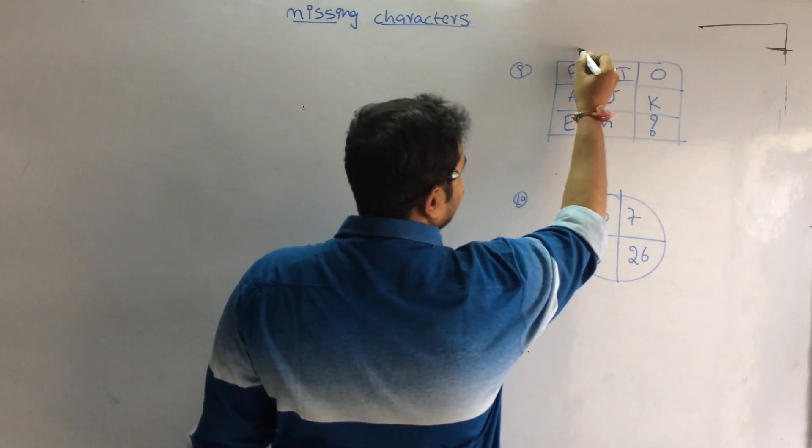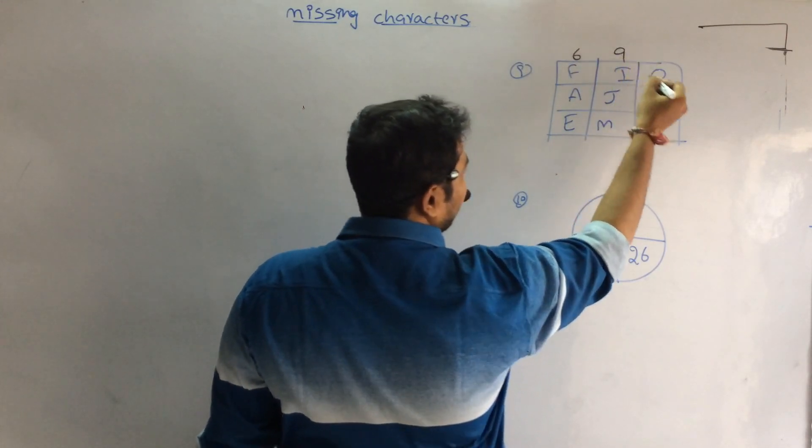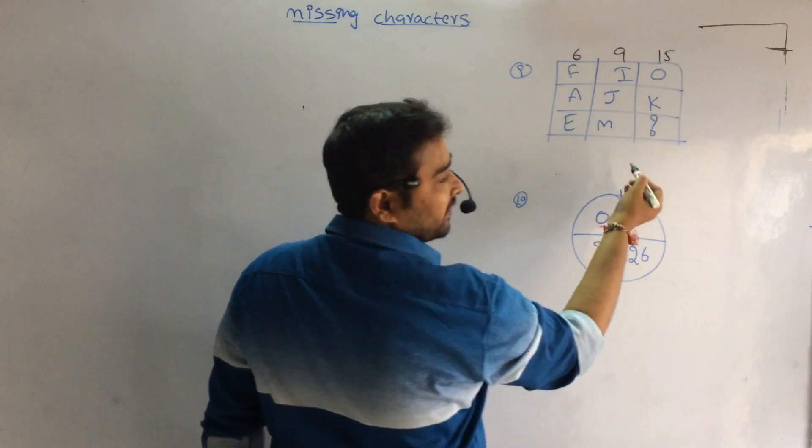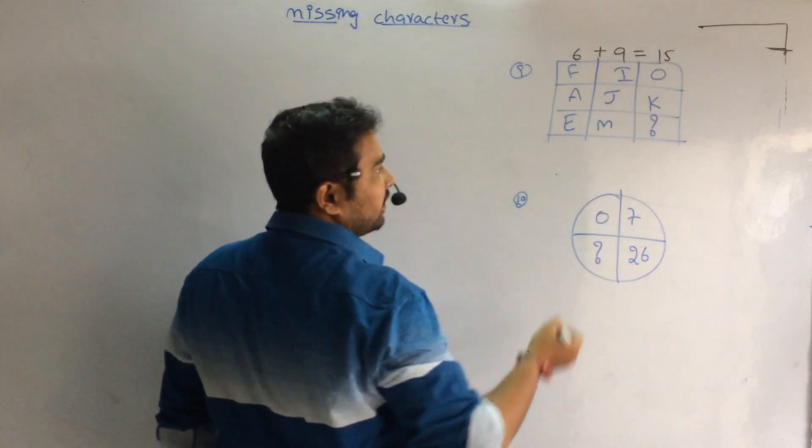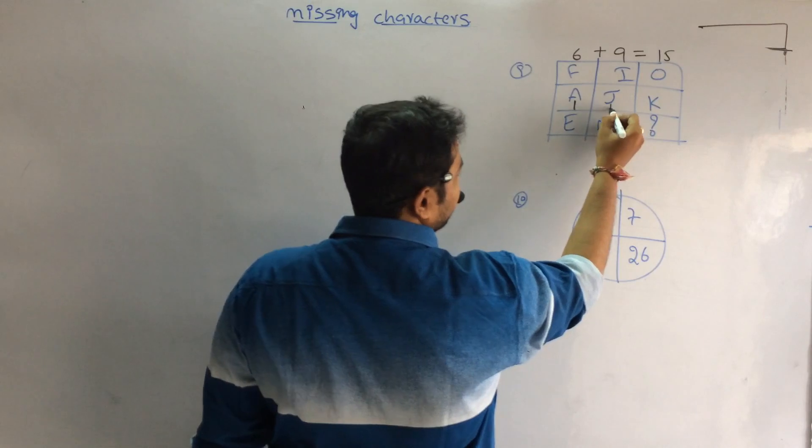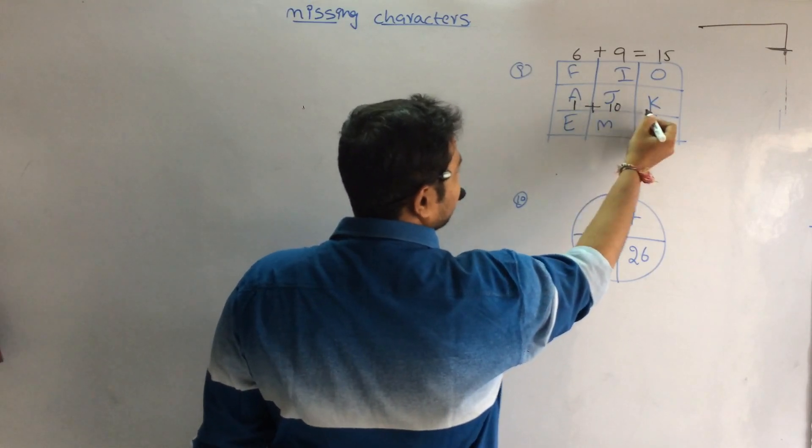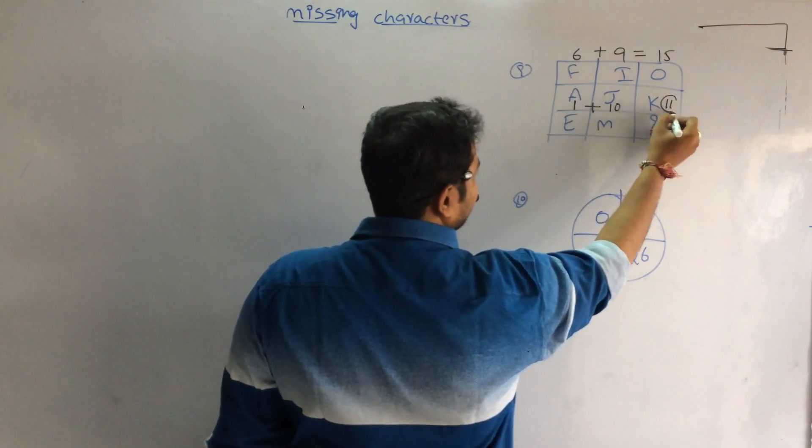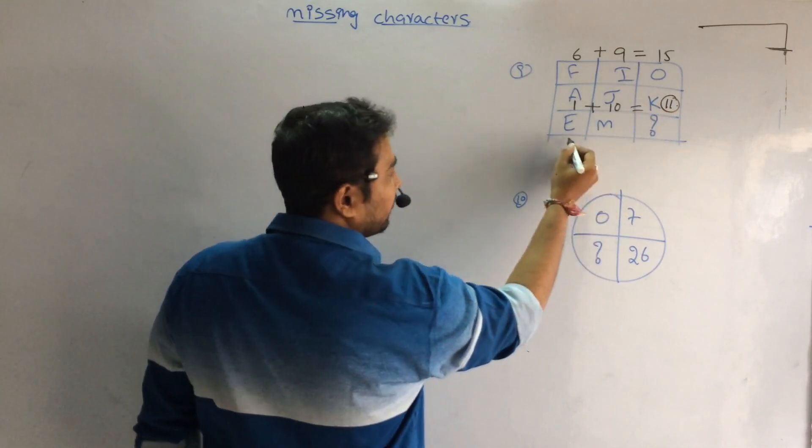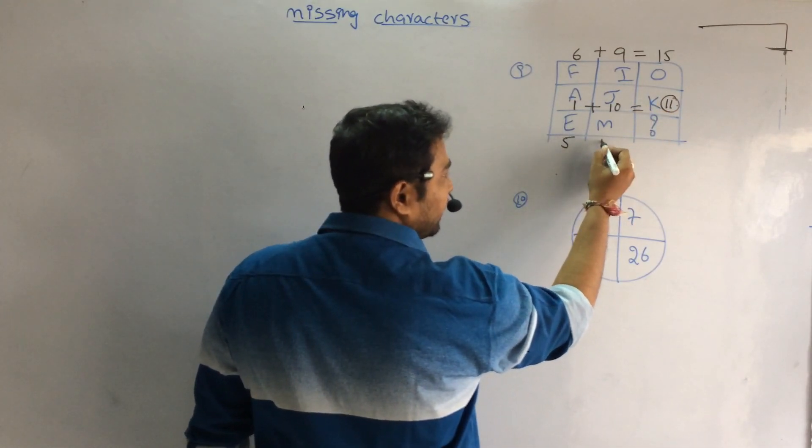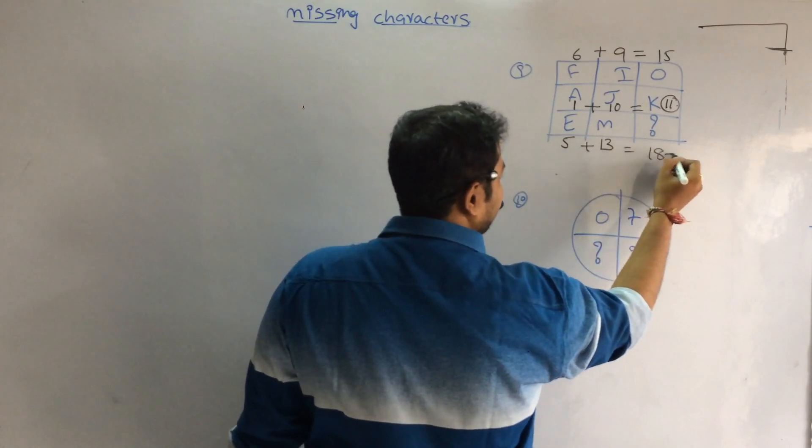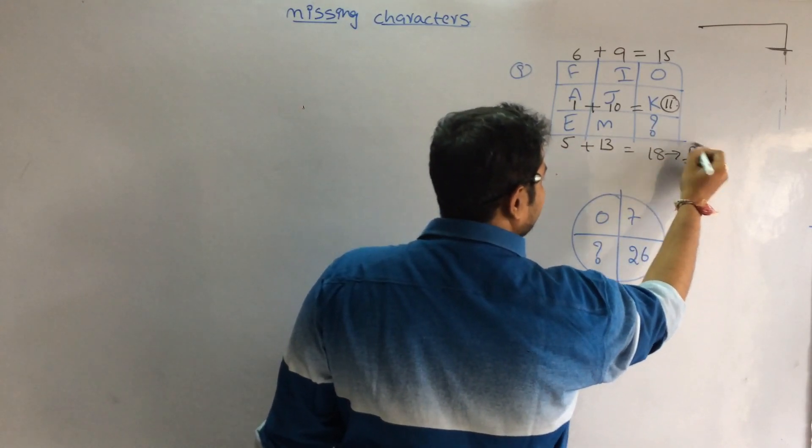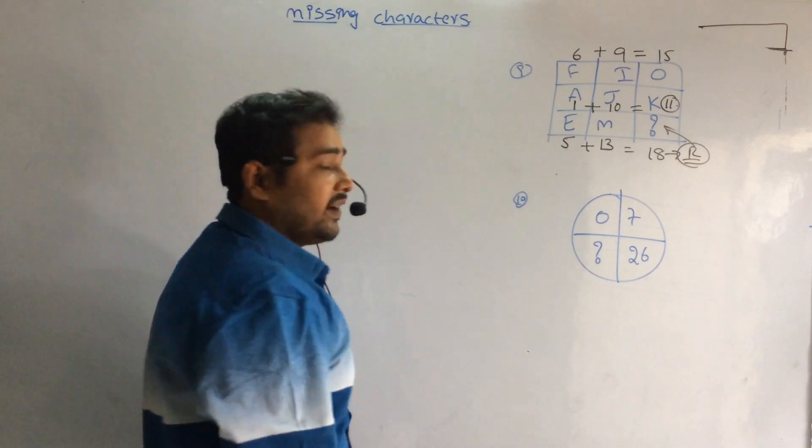Next, here all these are letters. F is the 6th letter, I is the 9th letter, O is the 15th letter. 6 plus 9 is 15. A is 1, J is 10. 1 plus 10 is 11. K is the 11th letter. Likewise, E is the 5th letter, M is the 13th letter. 13 plus 5 is 18. The 18th letter is R. So what is the value here? R.